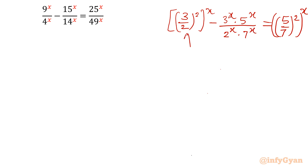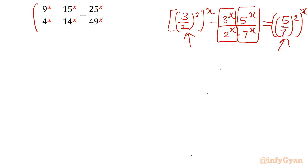Now if you observe, we have 3 over 2 and 5 over 7 appearing on both sides. That means we can divide by the right-hand side, or equivalently multiply both sides by 49^x over 25^x. So let us multiply both sides by 49^x over 25^x — left-hand side and right-hand side both.